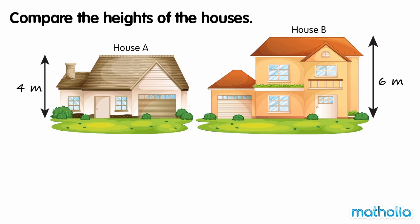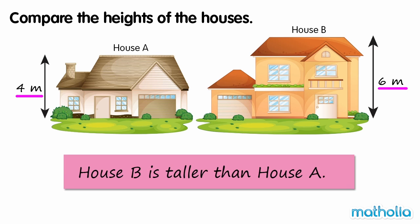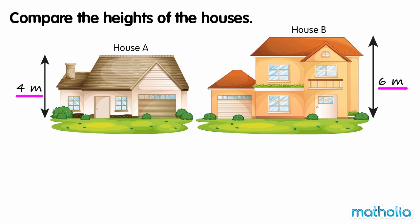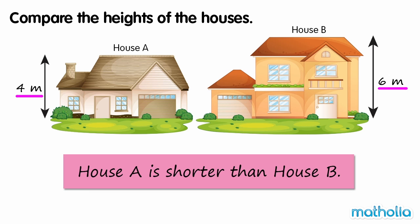Compare the heights of the houses. House A is 4 m tall. House B is 6 m tall. 6 m is greater than 4 m, so House B is taller than House A. 4 m is less than 6 m, so House A is shorter than House B.